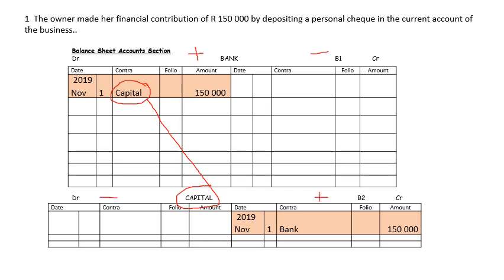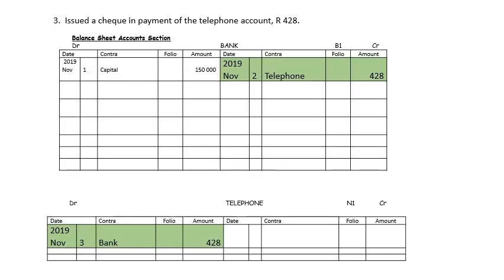Capital increases on the credit side, decreases on the debit side. So if the owner gives capital, her capital contribution will increase, which means her share in the business increases. Inside capital on the credit side, on the 1st, you will write bank because bank is the name of the other account concerned. And the amount is $150,000.